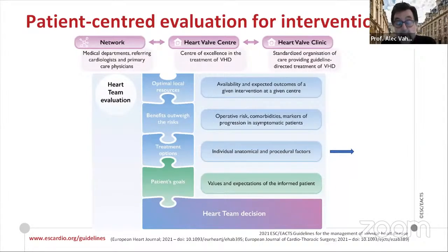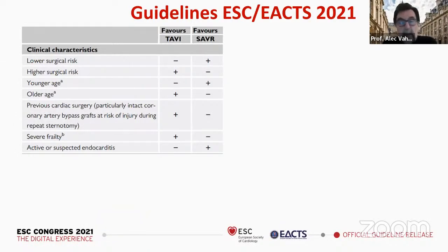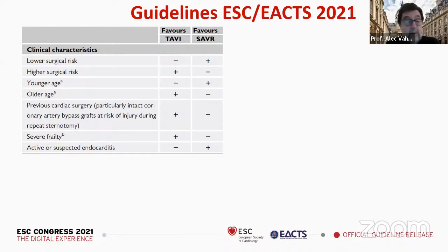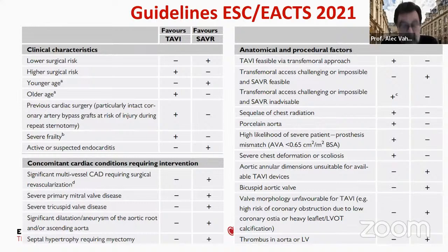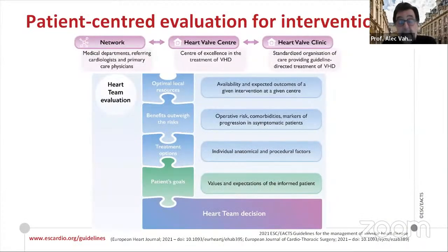The heart team should look at clinical characteristics — some favoring TAVI, others surgery — anatomical and procedural factors, and concomitant cardiac conditions requiring intervention. No single line of this analysis makes the decision alone, but a very thorough analysis of all these factors will help the heart team decide on the best possible approach for the given patient. That recommendation is then discussed with the patient, who analyzes it according to their own values and expectations.